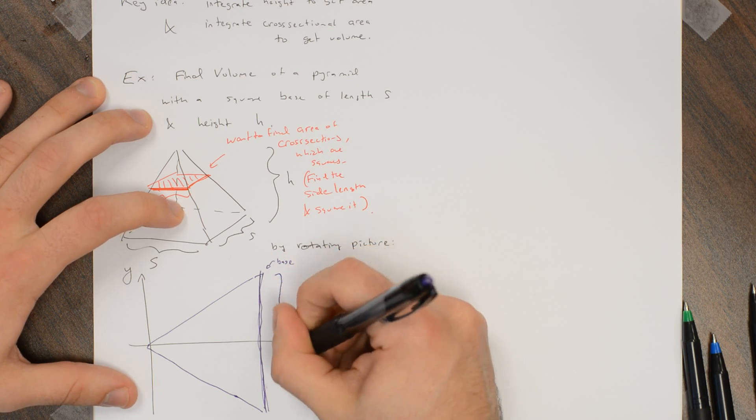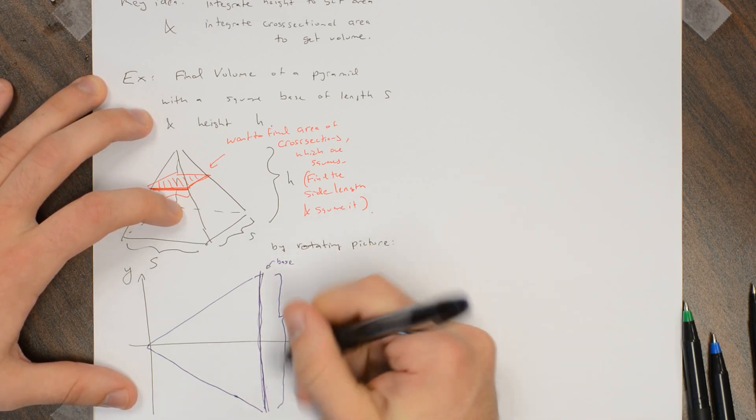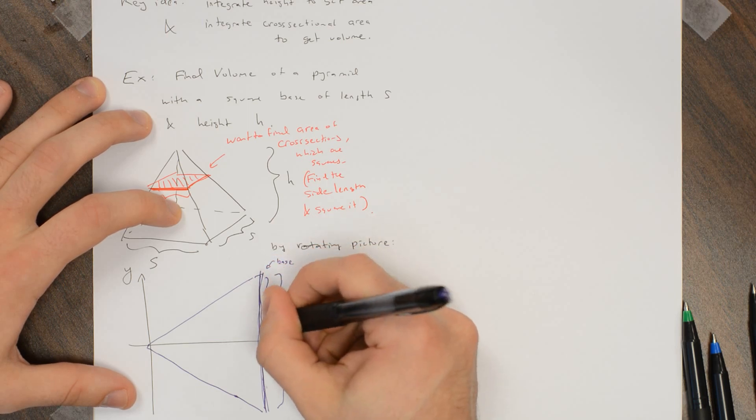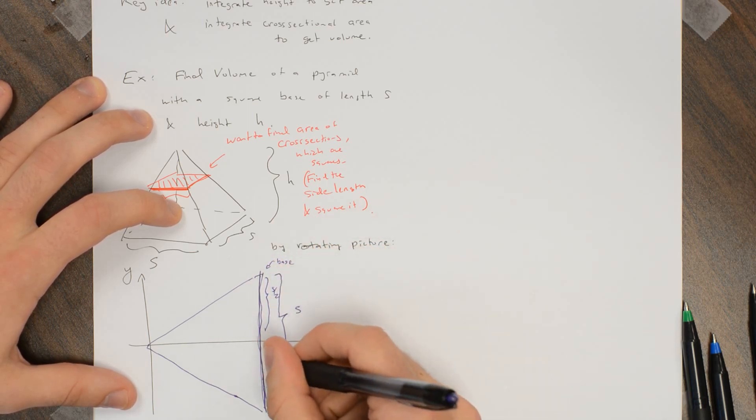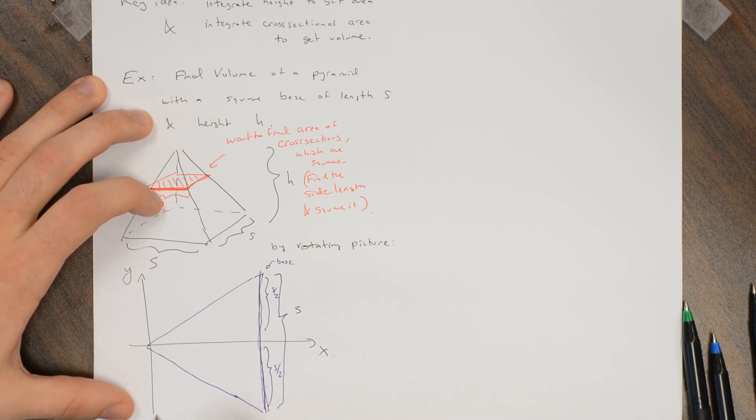So I know this total base height is s, and by symmetry this length is s over 2, and this length is s over 2. And what's more, I know the height of the pyramid, now that I've turned it sideways, the height of this pyramid is h.